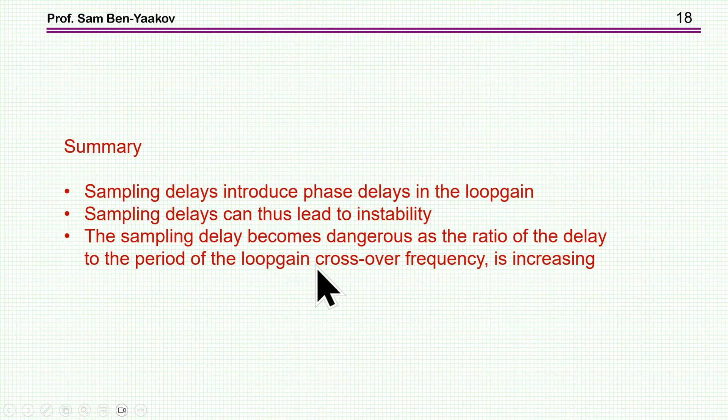So what are the conclusions of this short presentation? First of all, we clearly see that sampling delay introduce phase delays in the loop. And then the sampling delay can thus lead to instability because of the phase delay. And then the sampling delay becomes dangerous as the ratio of the delay to the period of the loop gain crossover frequency is increasing.